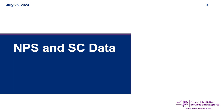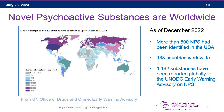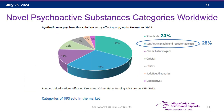Novel psychoactive substances are not just in the US — they are worldwide. According to the UN Office on Drugs and Crime Early Warning Advisory, the United States has reported the highest concentration of novel psychoactive substances. As of December 2022, more than 500 NPS have been identified in the US. Worldwide, 138 countries have reported these substances, and in total 1,182 substances were reported globally to the UNODC.